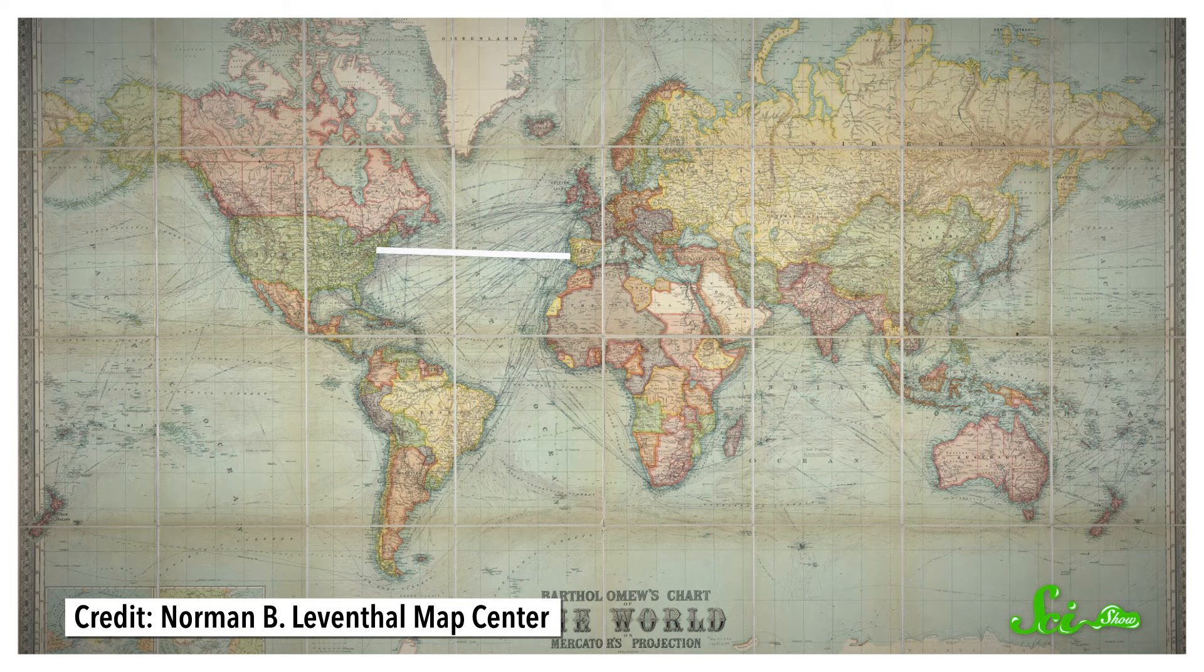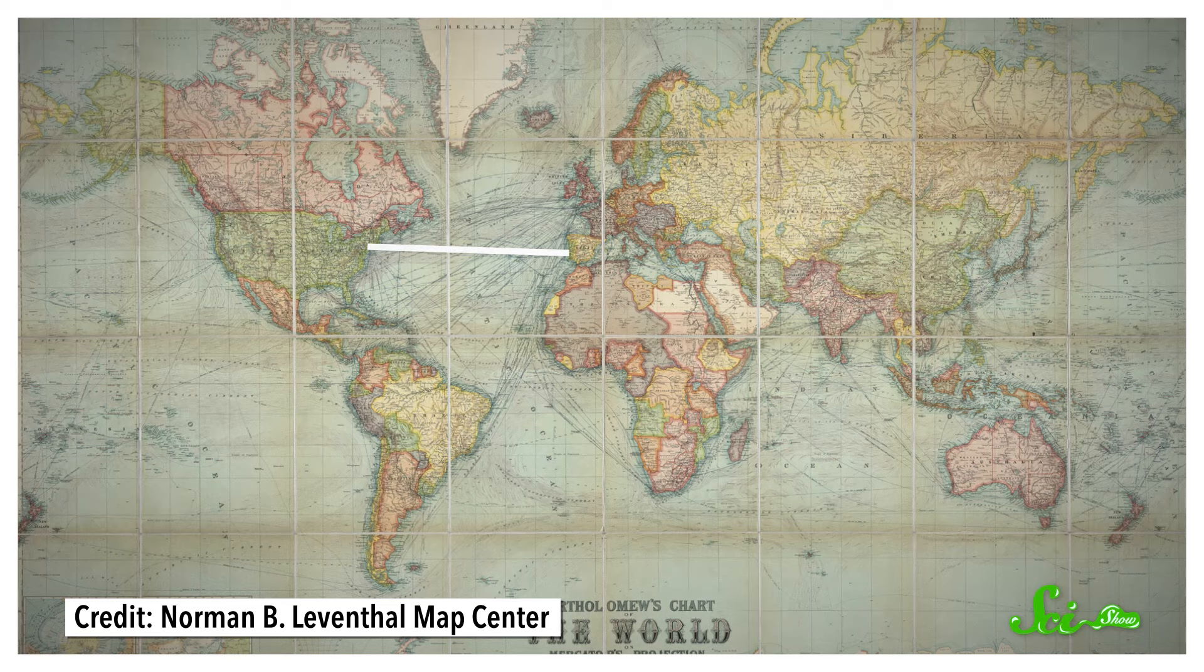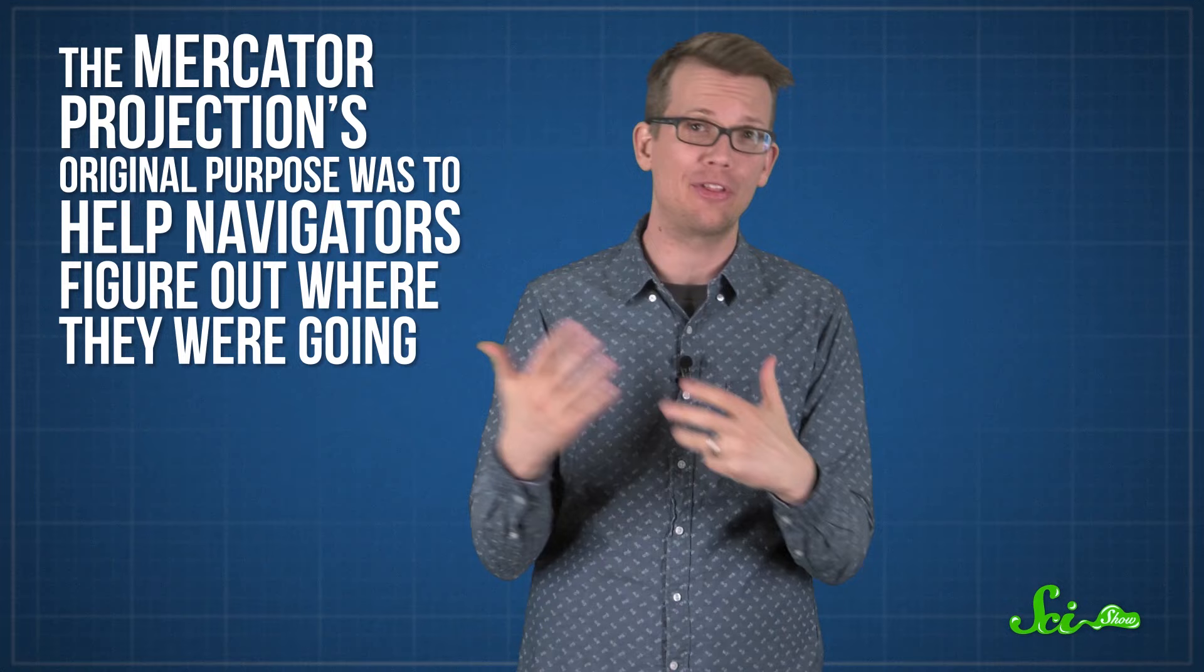That means that if you draw a straight line between any two points on a Mercator map, it will give you the same direction a compass would in real life, a feature that's super useful for navigators. Which is why the Mercator Projection's original purpose was to help navigators figure out where they were going.